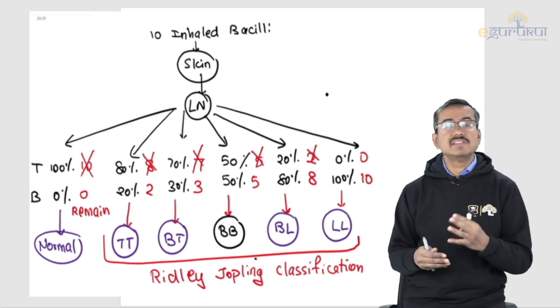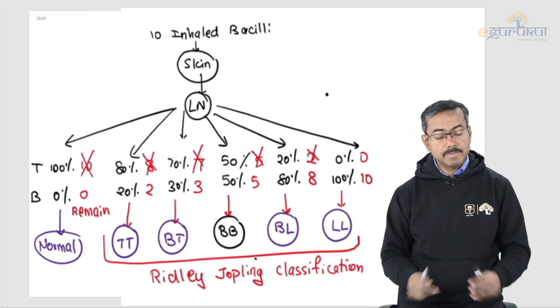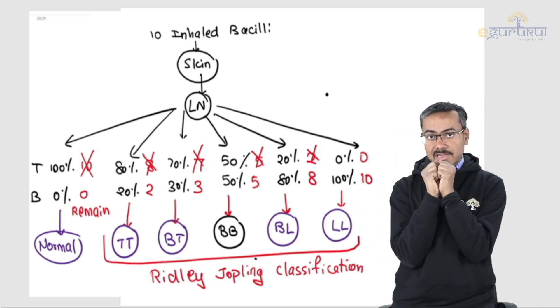T cells can kill leprosy, B cells cannot kill leprosy. Why would that be? See, macrophages have got the leprosy bacillus.